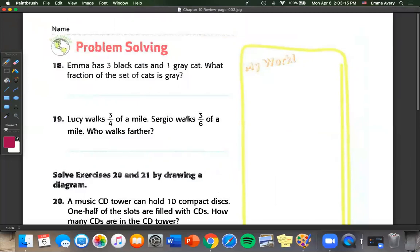So Emma has three black cats and one gray cat. What fraction of the set of cats is gray? Well, first we have to see how many cats she has in total. So three plus one equals four cats. And if we draw a model and we say that three are black and one is gray, well, then one fourth of the cats are gray.